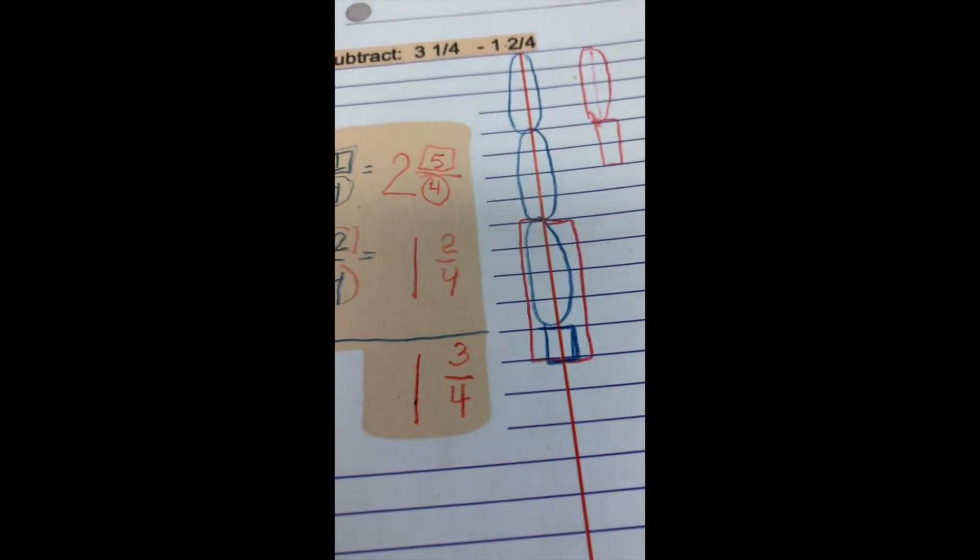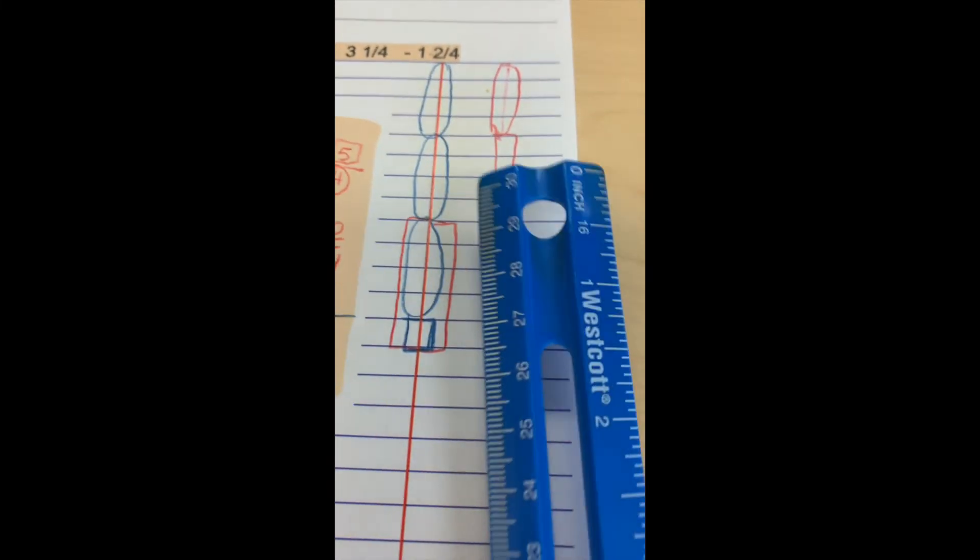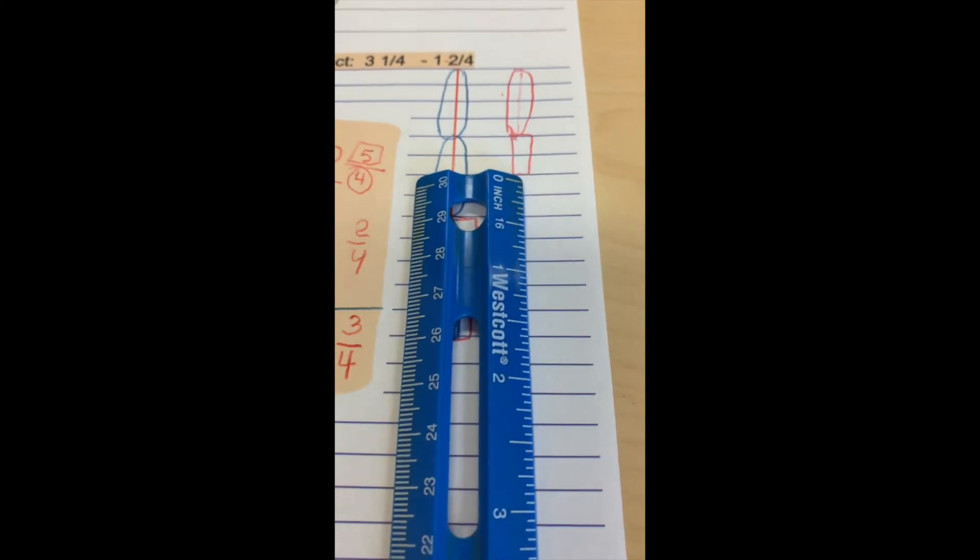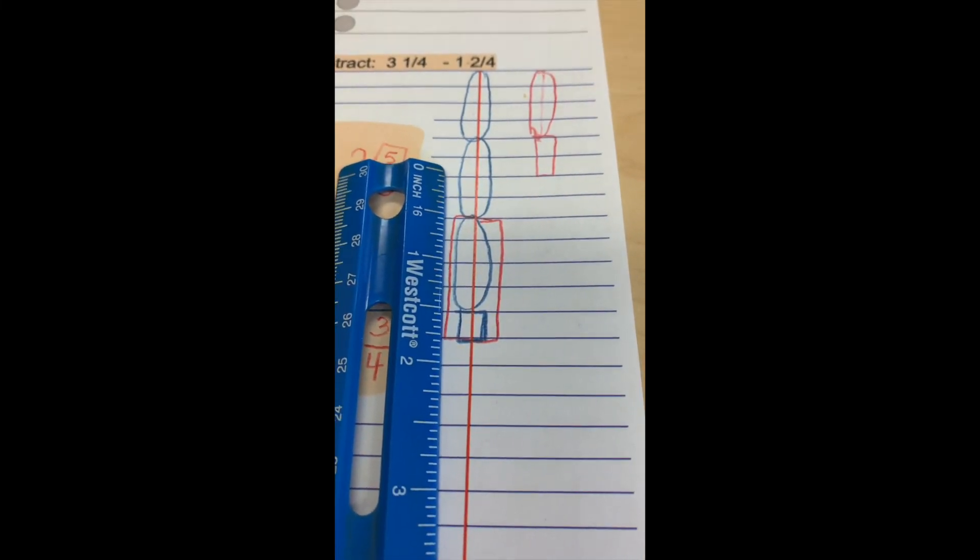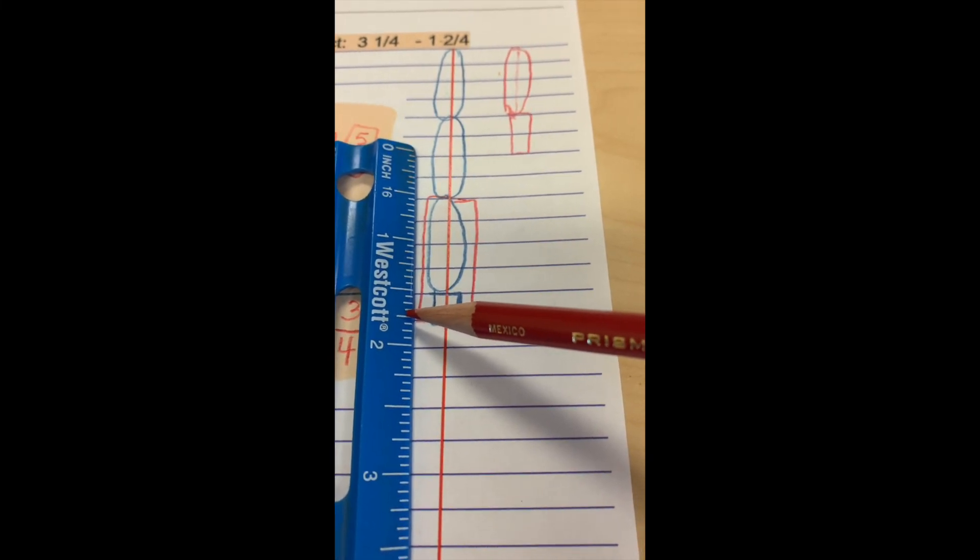Now if you take a ruler, you can measure the difference here in quarter-inch increments, and you'll get the same answer of 1 and 3/4.